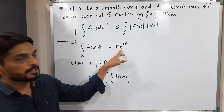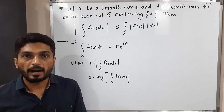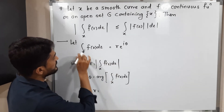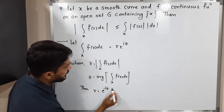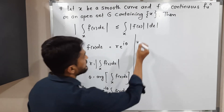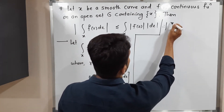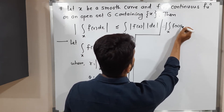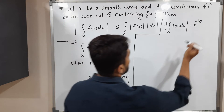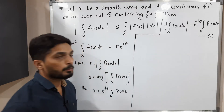I am going to shift e^(iθ) to the other side. To bring it to the numerator we write e^(-iθ). So r equals e^(-iθ) times the integration over x of f(z) dz. But r is nothing but the modulus, so therefore: |∫_x f(z) dz| = e^(-iθ) · ∫_x f(z) dz. I am calling this equation number one.